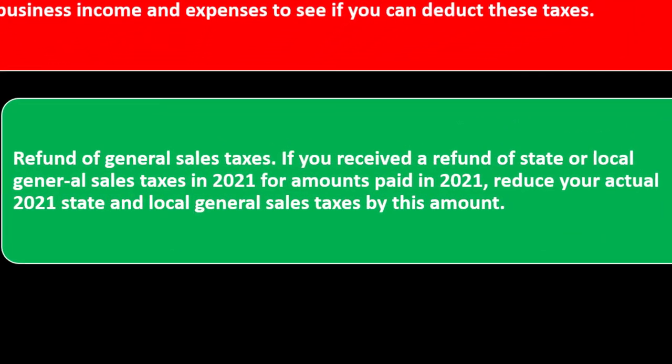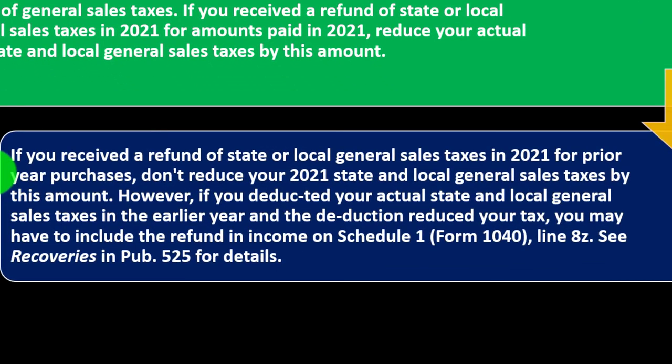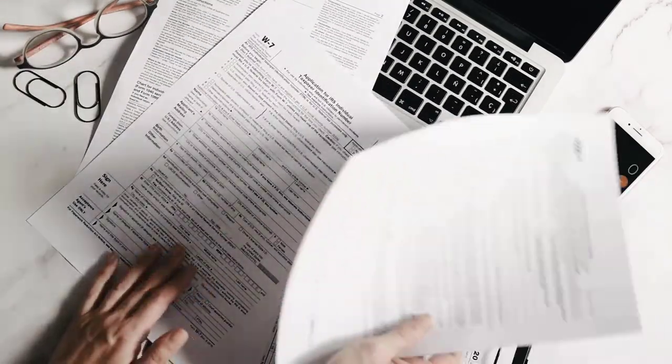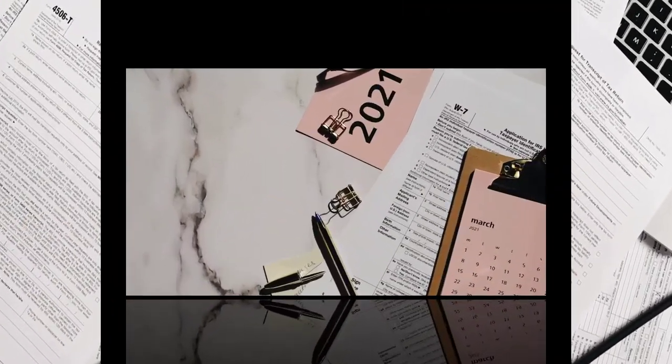Refund of general sales taxes: if you received a refund of state or local general sales taxes in 2021 for amounts paid in 2021, reduce your actual 2021 state and local general sales taxes by this amount. If you received a refund of state or local general sales taxes in 2021 from prior year purchases, don't reduce your 2021 state and local general sales taxes by that amount. This is similar to what we saw with the state and local income taxes — if you got a deduction on Schedule A and then got a refund in the following year, you might have to record it as income in the following year.